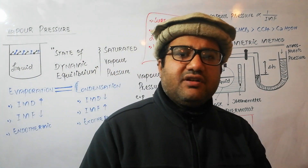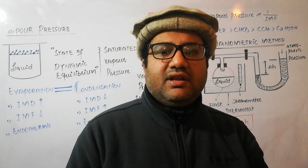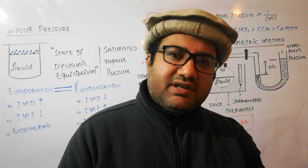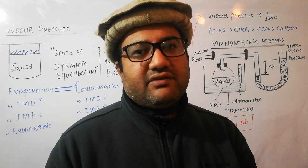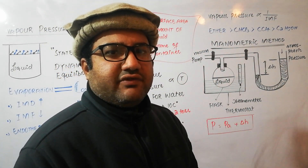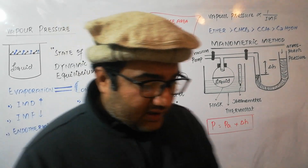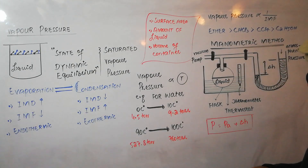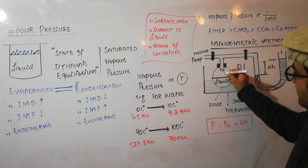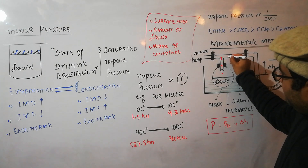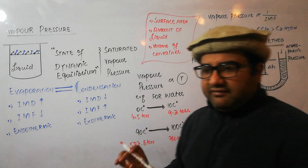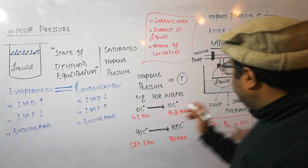After evacuation, the thermostat is turned on and set to the desired temperature — for example, 40°C — where we want to measure the vapor pressure. The vacuum pump end is then closed, and the molecules of the liquid begin to escape. Although 100% air evacuation is not achieved, the remaining air is minimal.